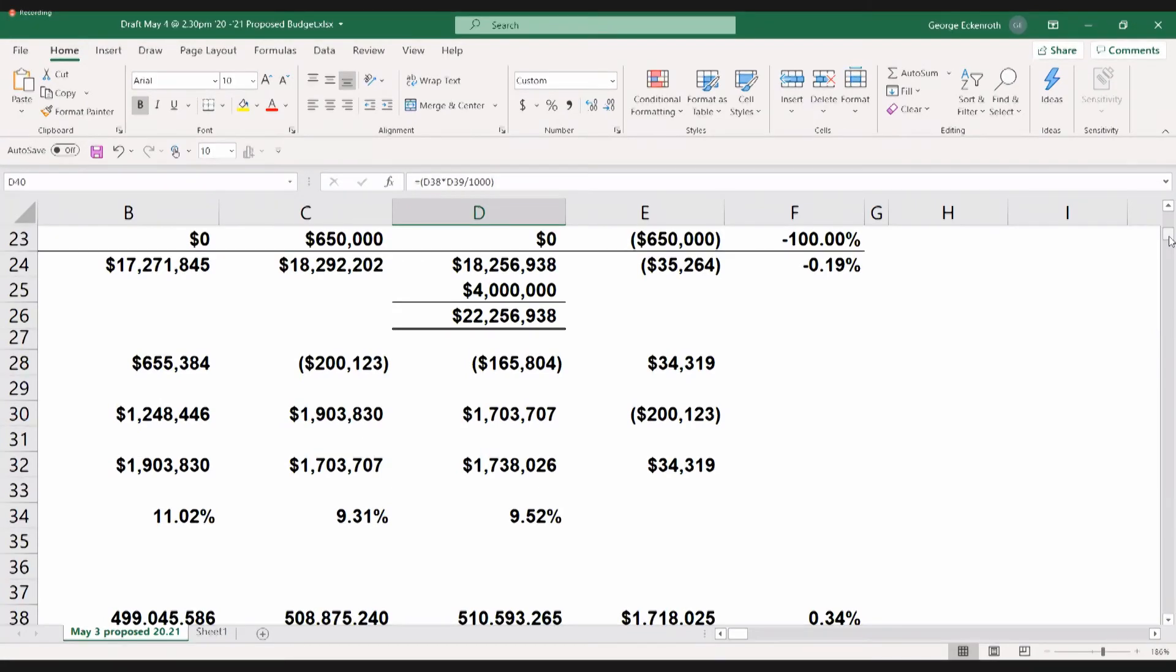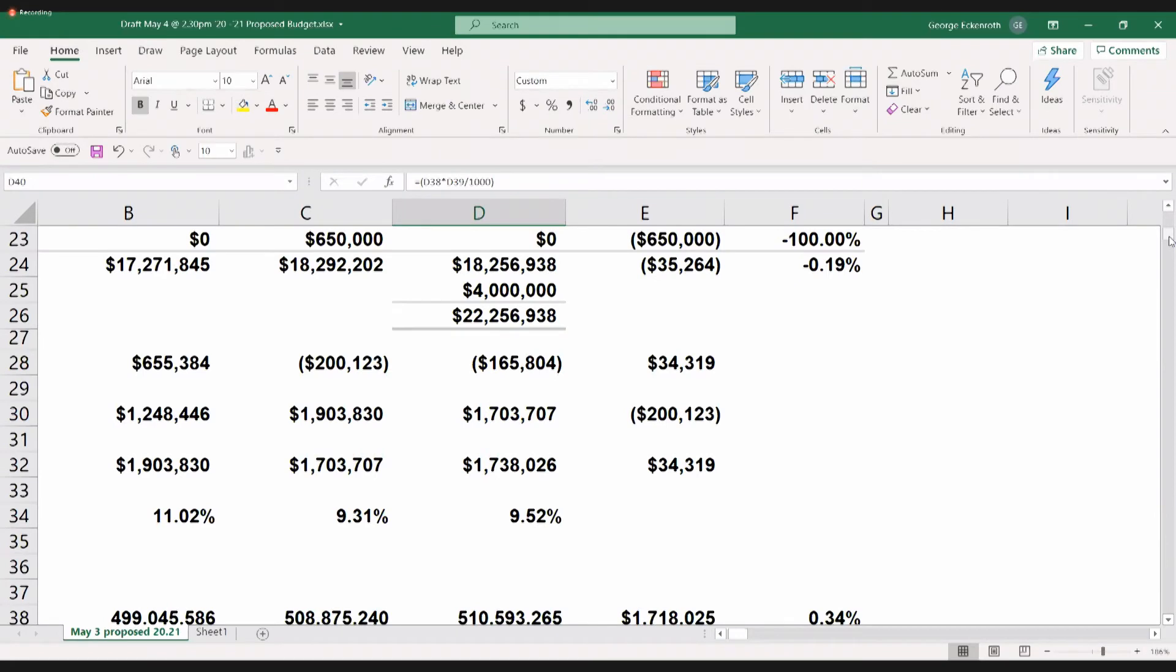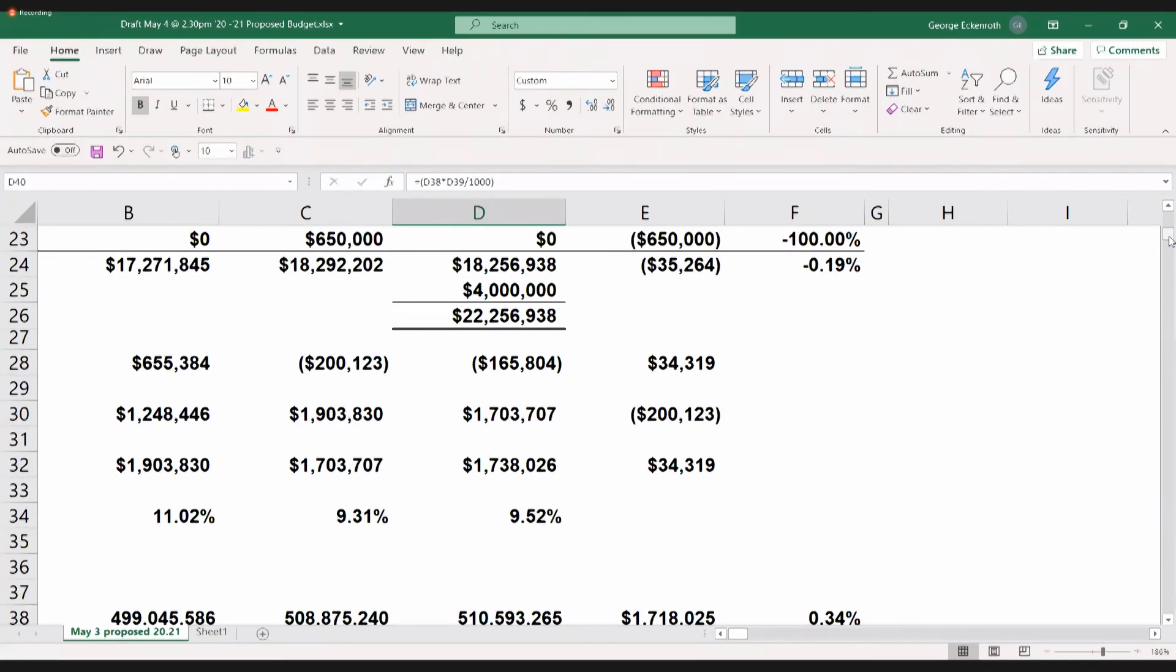Thank you. All those in favor of sending to the town meeting for a vote by the Board of Finance would be $18,256,938. Aye. Aye. Aye. Thank you. Good.